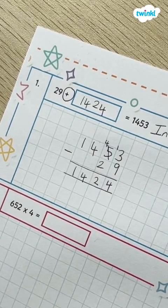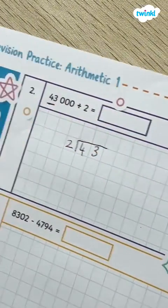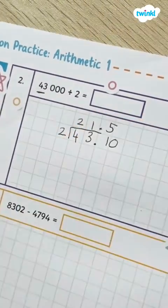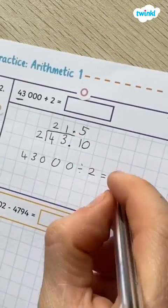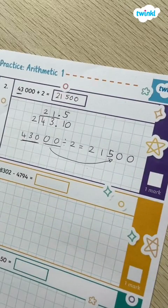Next is 43000 divided by 2. Here I'm going to simplify it by doing 43 divided by 2 using a short division method. Then all you have to do is put the zero placeholders back and you get your right answer.